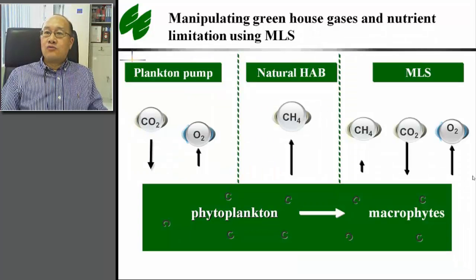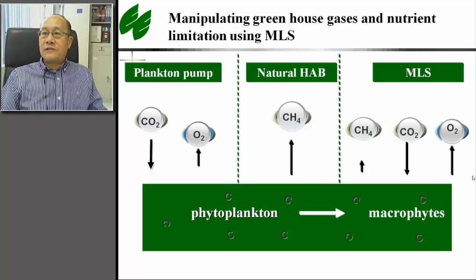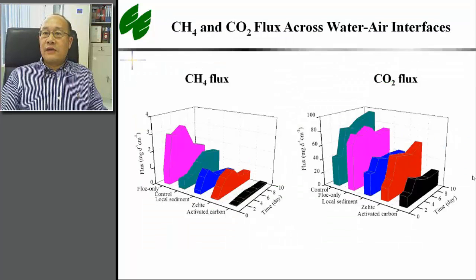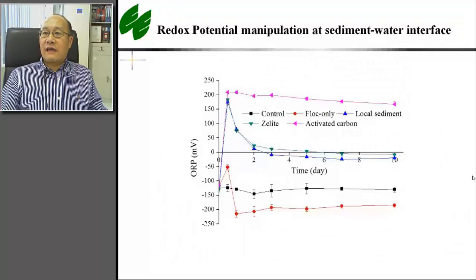In natural hub systems, anaerobic degradation of algae cells may result in greenhouse gas emission, such as methane. If the algae are used to feed the growth of submerged vegetation, greenhouse gas emissions may be reduced. Preliminary measurements indicated that both CH4 and CO2 fluxes over the air-water interfaces can be reduced by different oxygen nanobubble-modified local soil capping treatments. This may be related to the fact that redox potential in the sediment can be significantly manipulated due to the oxygen nanobubbles, which may greatly affect the microbial processes of the sediment.